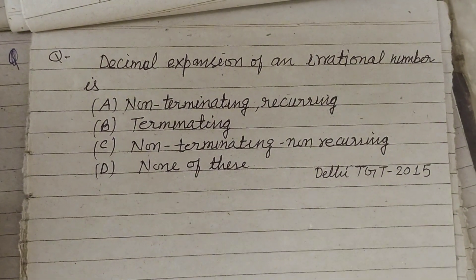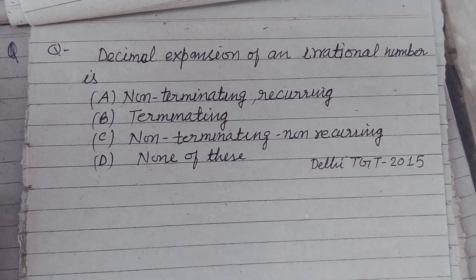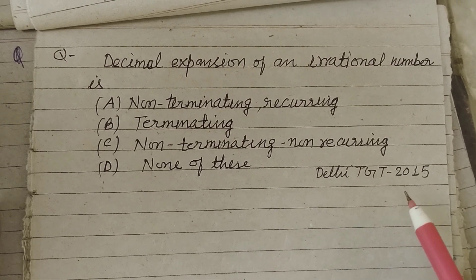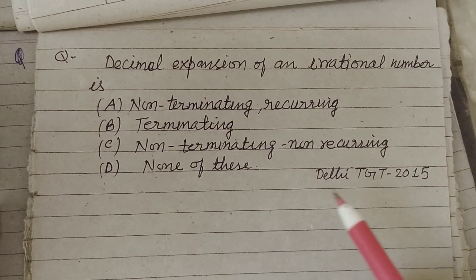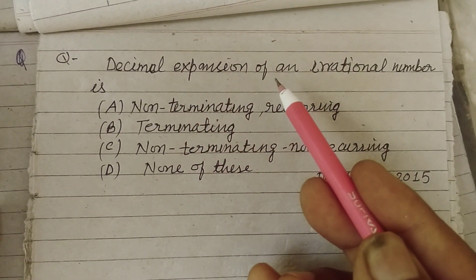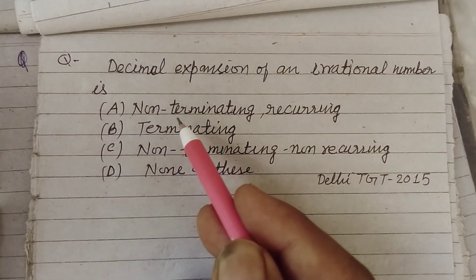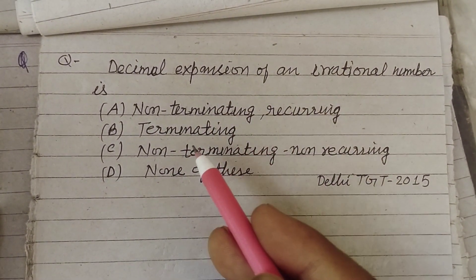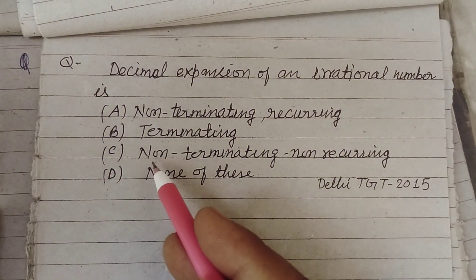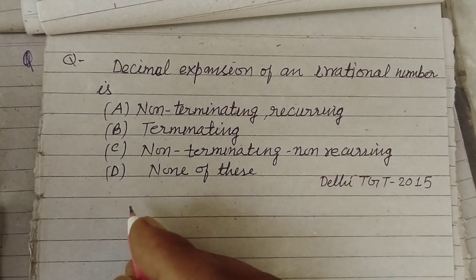Hello students, warm welcome to this YouTube channel. Question from Delhi TGT May 2015: Decimal expansion of an irrational number is — (A) non-terminating recurring, (B) terminating, (C) non-terminating non-recurring, (D) none of these.